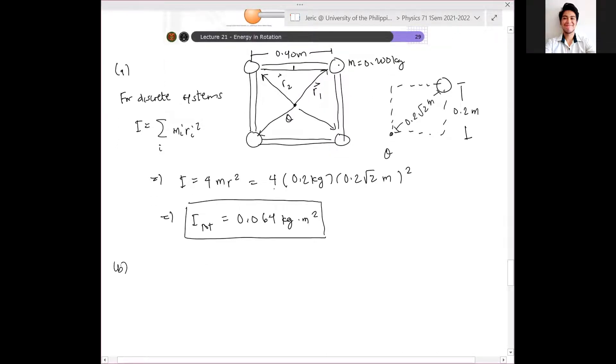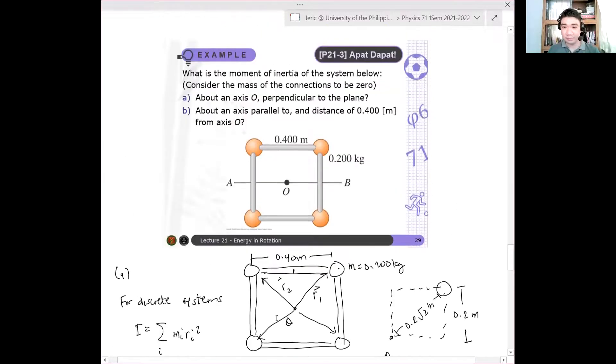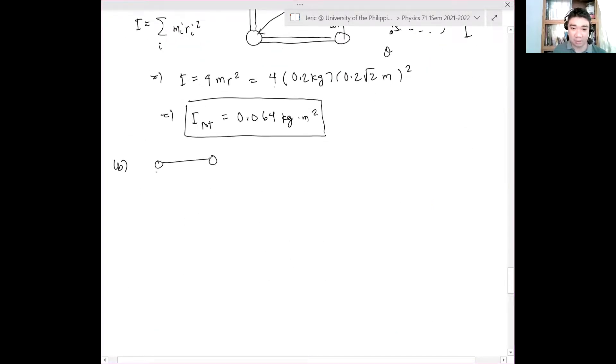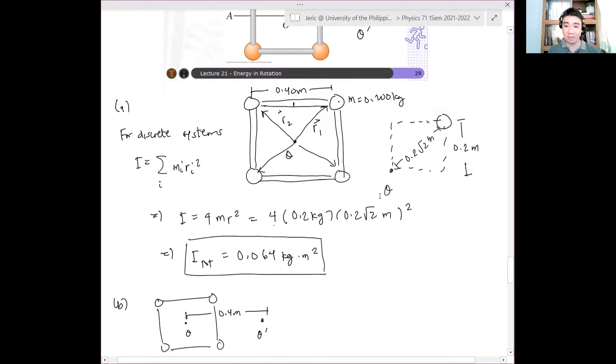Now, for letter B, ang tinatanong naman, what if the axis of rotation is parallel to a distance to the given first axis and it's 0.4 meters from axis O. So for example, meron ako dito isa pang axis, let's say O'. Ano yung magiging moment of inertia ngayon? Paano hanapin yun? So let's say meron akong object. This is axis O, and this is O' prime. And the distance is 0.4 meters. Paano kahanapin yan?